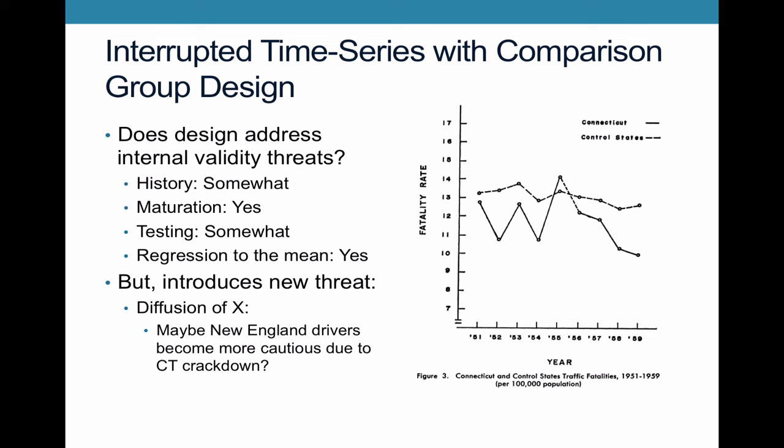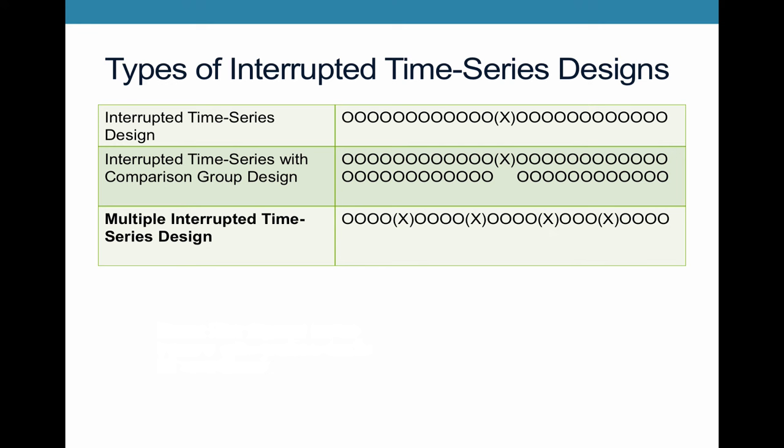So to try to improve on some of these internal validity threats even more, there's a new kind of interrupted time series design that researchers use, which is called the multiple interrupted time series design, sometimes called MITS design. And here, you want to look at not just the effect of one treatment that's imposed, but what if you had the treatment imposed multiple times? Then you'd be able to see if there continues to be that causal effect over and over again. What this would mean is that first time around, you have a slight crackdown, and then you have a stiffening of punishment even more, more and more crackdowns. So if you were to see the same trend happen every single time you make the punishment worse, that would really reinforce your argument and would add additional evidence.